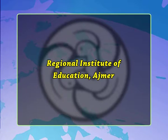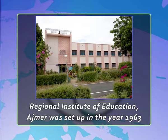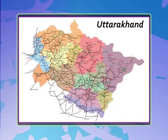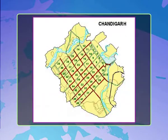The Regional Institute of Education, Ajmer (RIE Ajmer) was set up in 1963. It caters to the educational needs of the northern region, comprising the states of Haryana, Himachal Pradesh, Jammu and Kashmir, Punjab, Rajasthan, Uttarakhand, Uttar Pradesh, Delhi, and the Union Territory of Chandigarh. As an advanced and pioneering institute, it tries out innovative pre-service courses, promotes research, develops instructional material, and imparts training to in-service teachers in various school subjects and related pedagogy.